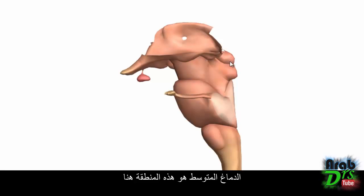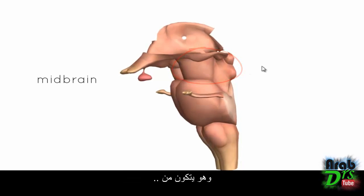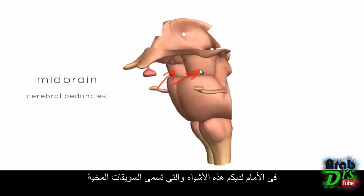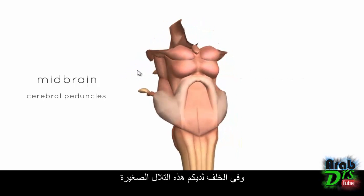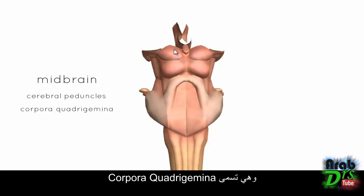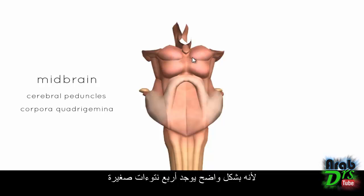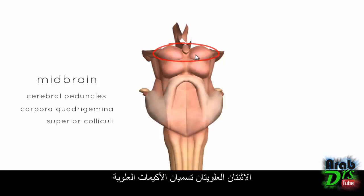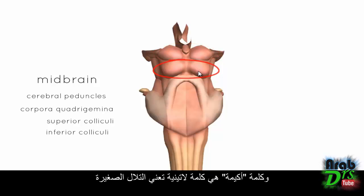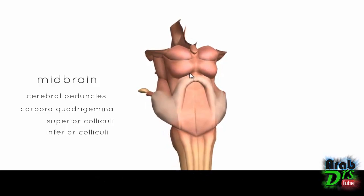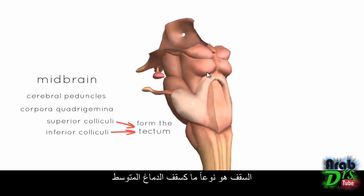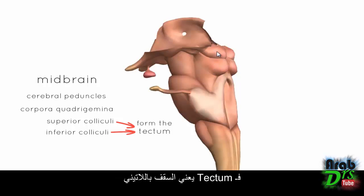The midbrain consists of, at the front, these bits called cerebral peduncles. At the back, you've got these little hills called the corpora quadrigemina — Latin for 'quadruplet bodies' because there are four bumps. The top two are called superior colliculi and the bottom two are called inferior colliculi. The word 'colliculi' is Latin for 'lower hills.' These colliculi sit on the tectum, which is the roof of the midbrain — 'tectum' means roof in Latin.